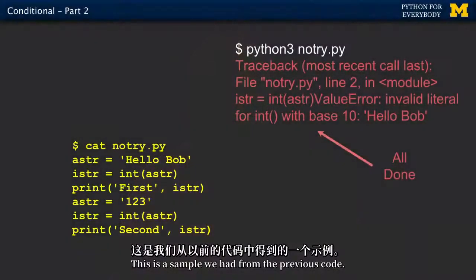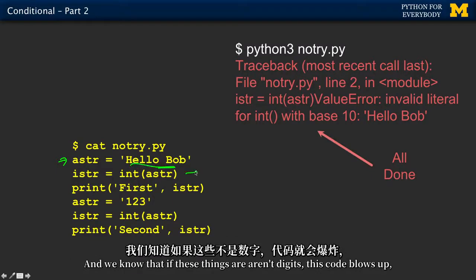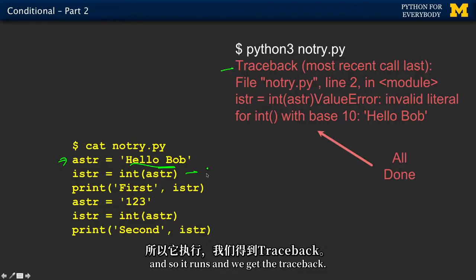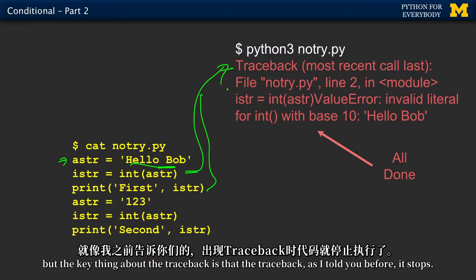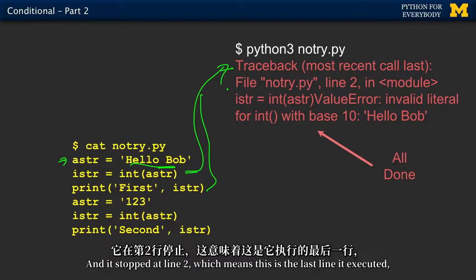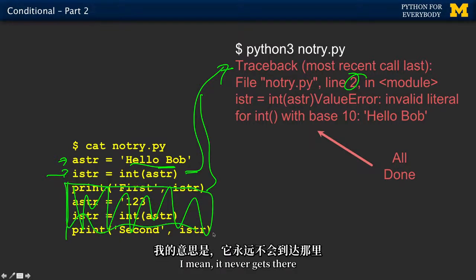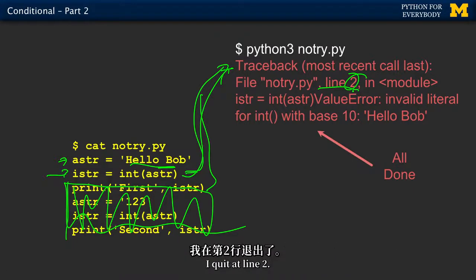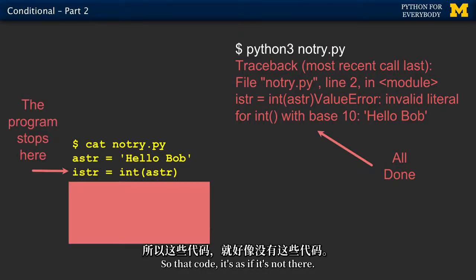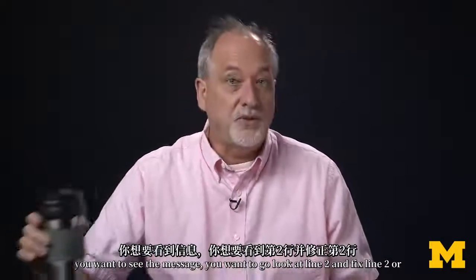Let's take a look at something. This is a sample we had from the previous code. It comes down, it sticks Hello Bob in, then it converts this to an integer. And we know that if these things are digit, this code blows up. And so it runs and we get the traceback. The traceback happens because of this line right here. But the key thing about the traceback is that it stops. And it stopped at line two, which means this is the last line it executed. But it doesn't continue, which means this code is gone. It never gets there because it's like I'm confused. I'm quitting. I have quit at line two.